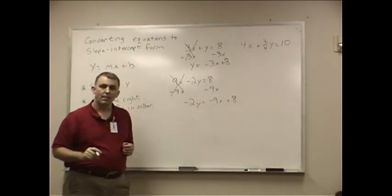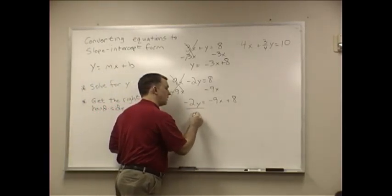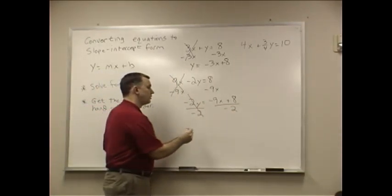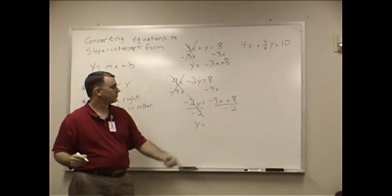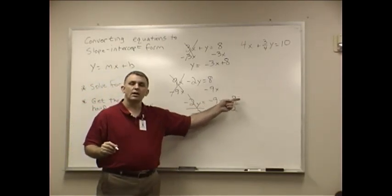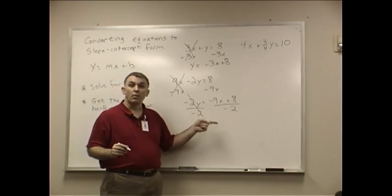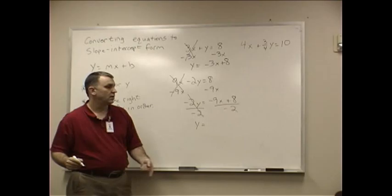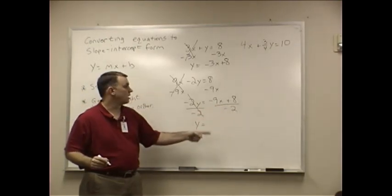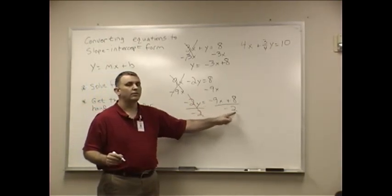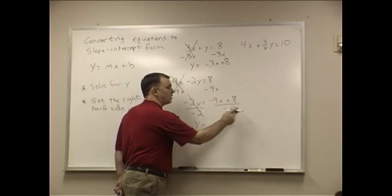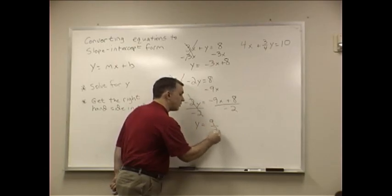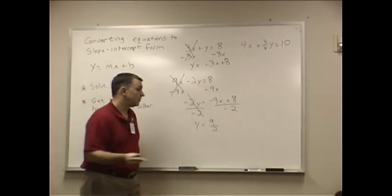The Y is not by itself, so to get rid of that negative 2, I'm going to divide both sides by negative 2, so that will cancel. Y equals. Which should I divide the negative 2 by? The answer is both of them. This negative 2 has to be distributed as part of the distributive property. So, negative 9X divided by negative 2. A negative divided by a negative is a positive, leaves me with 9 over 2, since that doesn't divide nicely, X.